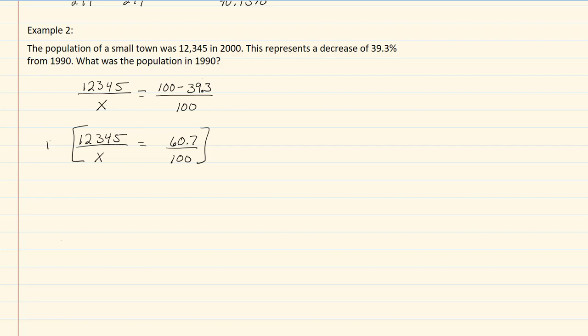Multiply by our common denominator, and our x's will cross off here, and we get a really big number here, and our hundreds cross off here giving me 60.7x.